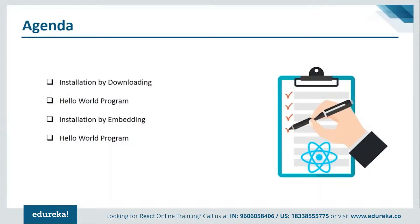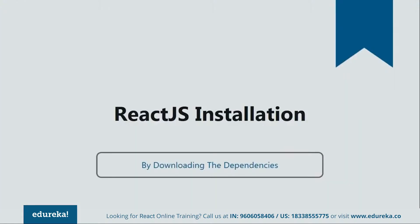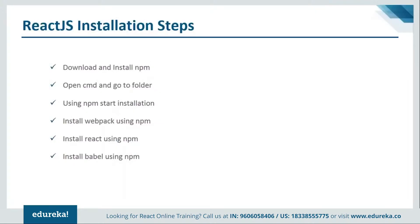Let's get started with our first method: installation by downloading via npm. In order to install by downloading the dependencies, you need to follow some steps. The first step is to download and install npm. If you're not familiar with npm, it is a package manager for the JavaScript programming language and you must have it on your system. Let me show you where you can download it.